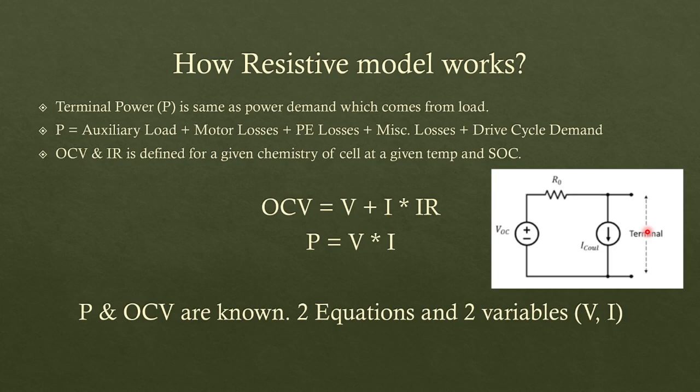So power demand P equals summation of all the consumptions. So it would be auxiliary loads, motor losses, power electronic losses, any other miscellaneous losses in the vehicle, plus drive cycle demand. So drive cycle demand consists of vehicle losses in the form of driveline loss, aerodynamic loss, rolling resistance losses of the vehicle, gradient losses, and so on.